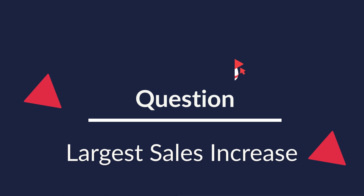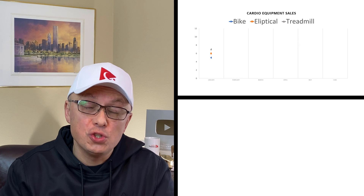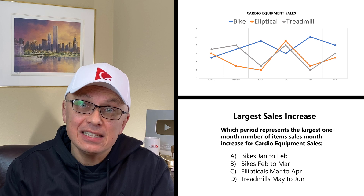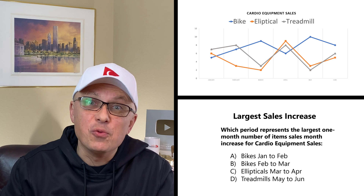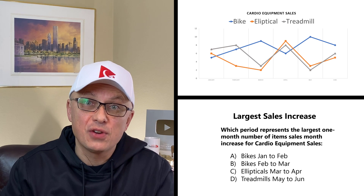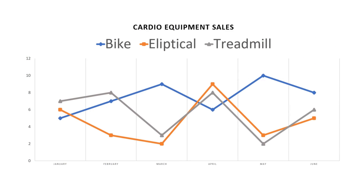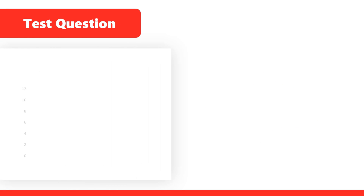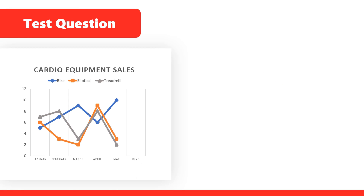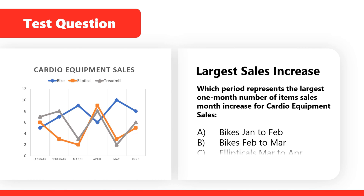A lot of times you might get a question which asks you to determine the sales increase. You're typically presented with a graph which shows lines that represent different sales. In our case, we're presented with a chart that shows sales of cardio equipment from January to June — bikes represented by the blue line, ellipticals by the orange line, and treadmills by the gray line. The question asks you to determine the largest one-month number of item sales increase for cardio equipment.